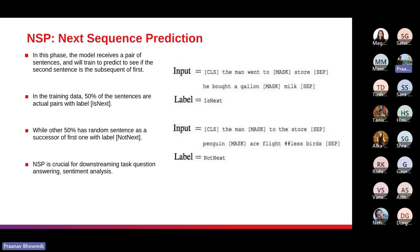Once the model is trained, it can be used to predict the order of a pair of sentences by providing tokenized input and obtaining the predicted label. Next Sequence Prediction with BERT is a valuable task as it enables the model to understand the relationship between sentences, which aids in downstream tasks like natural language inference, question answering, and sentiment analysis.